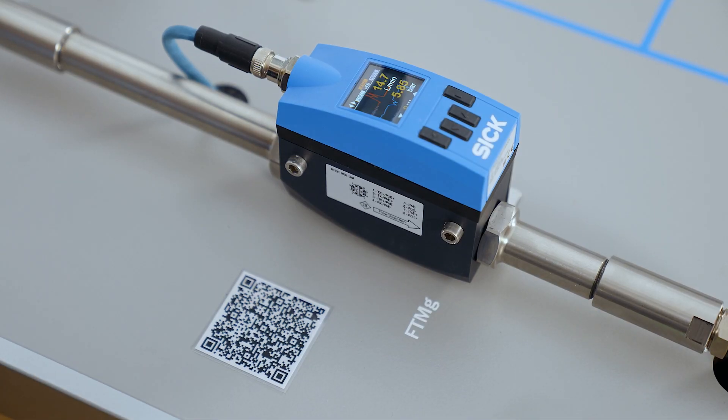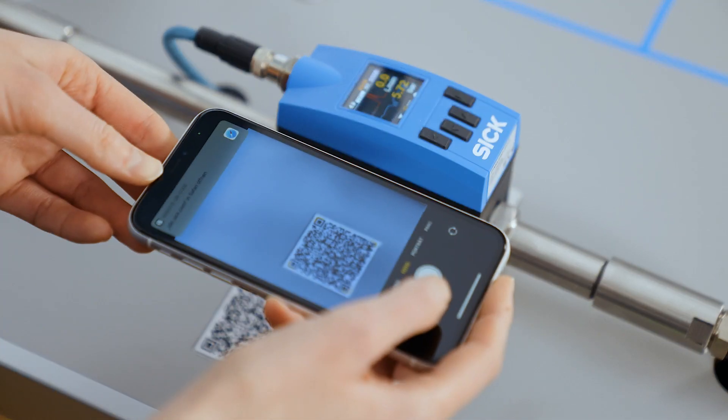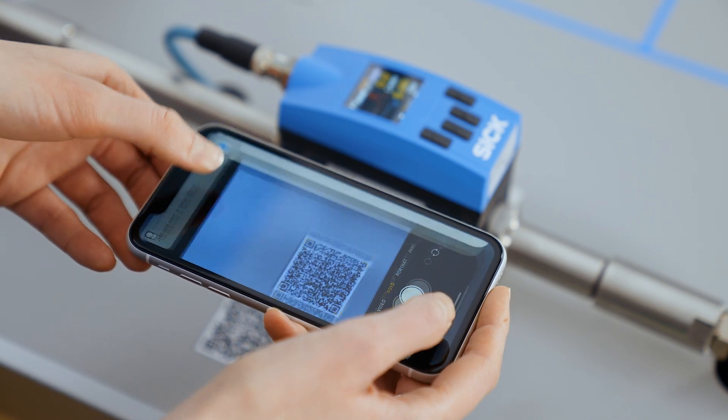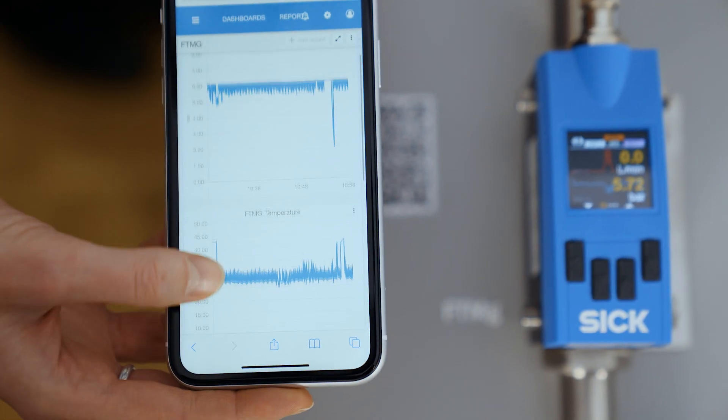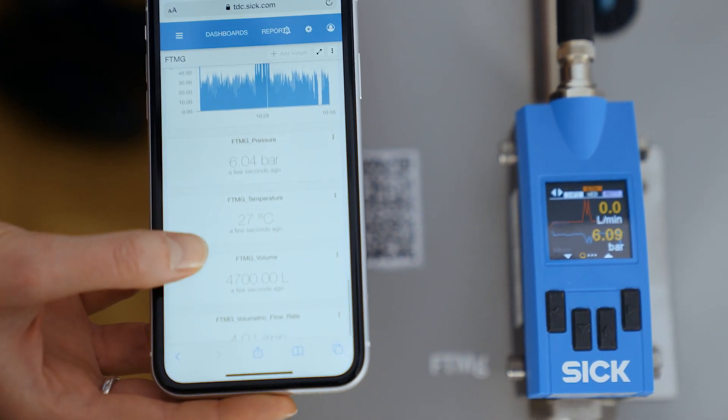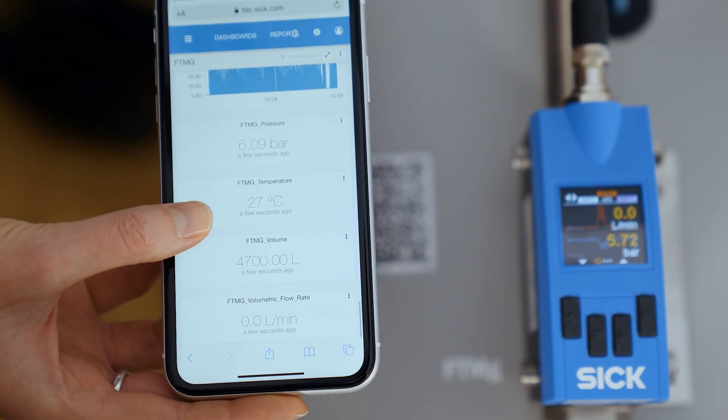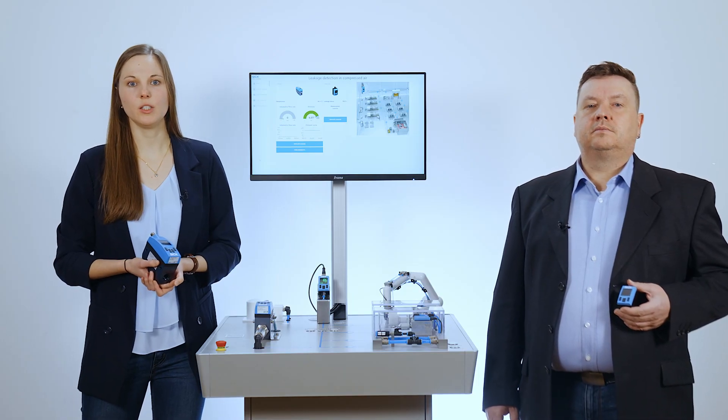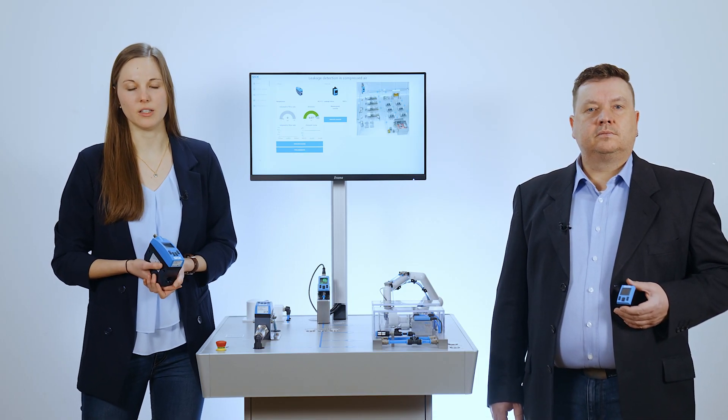Using the QR code, the customer can access the SICK cloud directly without having to dial into a network. This makes it possible to analyze consumptions and plan maintenance regardless of the location. Therefore, the FTMG is perfectly suited for condition monitoring and predictive maintenance.